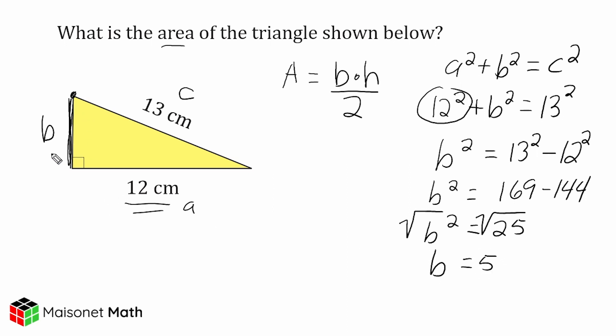So the height of this triangle is exactly 5 centimeters. Now we have the information we need to calculate the area of this triangle. So let's go ahead and multiply our base of 12 and our height of 5 and divide that total by 2. So essentially we just have an area that is equal to 60 divided by 2, which is equal to 30 square centimeters.